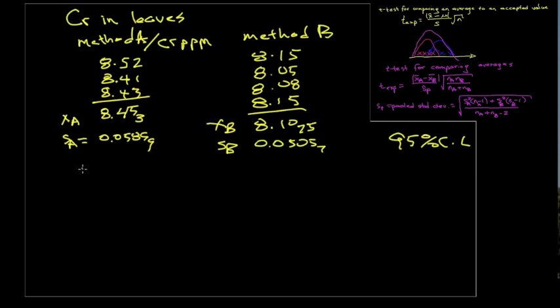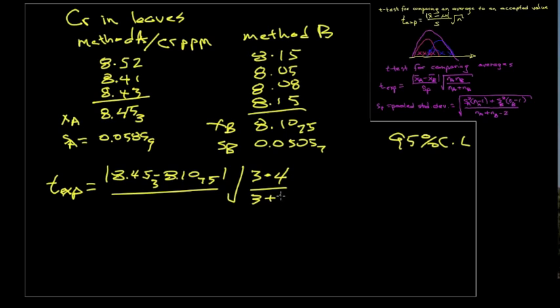So we apply our experimental value of t equation here. We take the difference between the two average values and we'll divide by the pooled standard deviation. Let's calculate that in a moment. And we have to then multiply by the number of measurements in the first set, 3, times the number of measurements in the second set, 4. And then sum those two, take that ratio and the square root of the ratio.